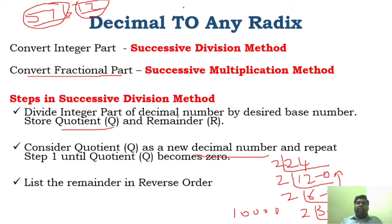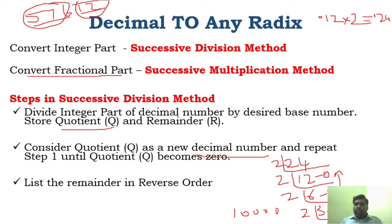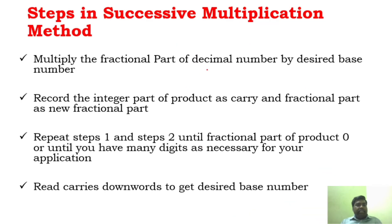For the fractional part, take 0.12 as an example. Multiply the fractional part by the corresponding base — 2 for binary, 8 for octal, or 16 for hexadecimal. For 0.12 × 2 you get 0.24, so the carry is 0. Multiply 0.24 × 2 again and record any carry. Continue this process — you will understand better when I explain with a full example.